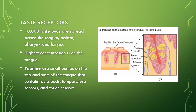We have about 10,000 taste buds on the tongue, spread across it but also on the hard and soft palate and in the pharynx and larynx. These taste buds sit within papillae, which are small bumps on the top and sides of the tongue. The papillae contain the taste buds but also sensors for touch and temperature. Each papilla has a channel, and inside the channel are the actual taste buds.